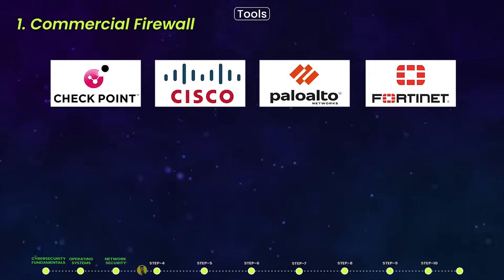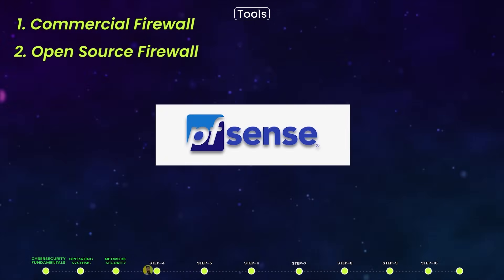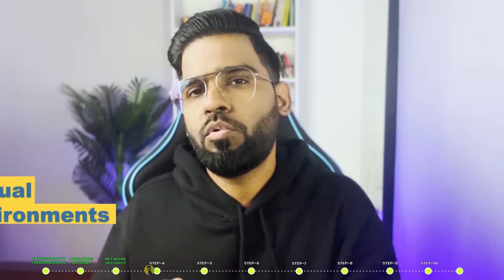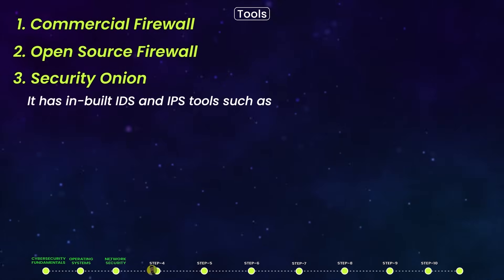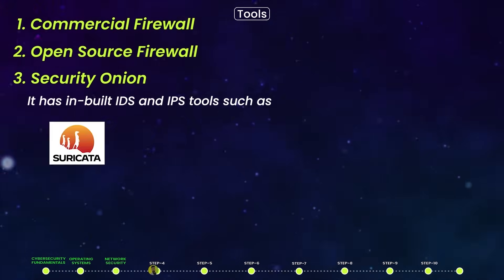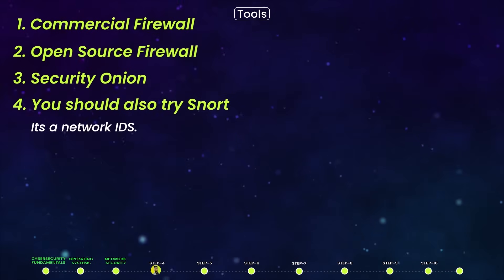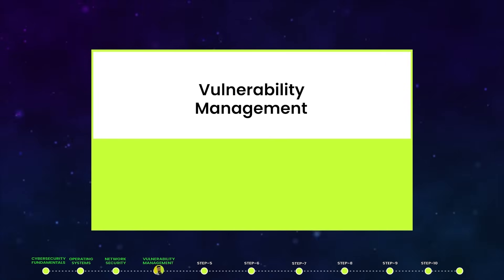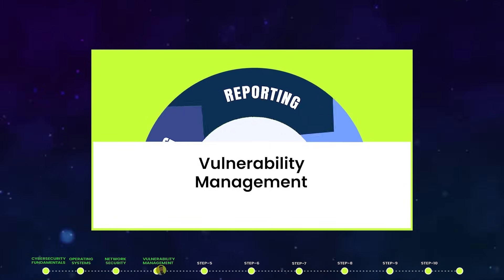For tools: commercial firewalls include Checkpoint, Cisco, and Palo Alto — you can get a trial license directly from Checkpoint's official website. For open source, you can download pfSense and deploy it in your virtual environment. Try Security Onion, which has built-in IDS and IPS tools such as Suricata and Zeek. Also try Snort, a network IDS.